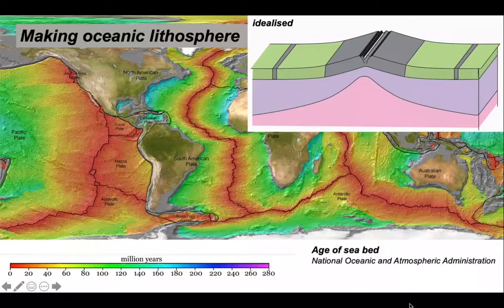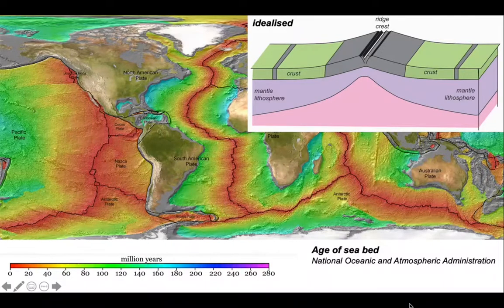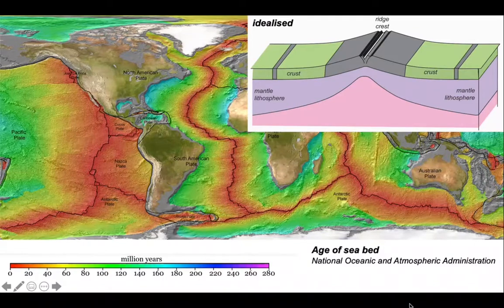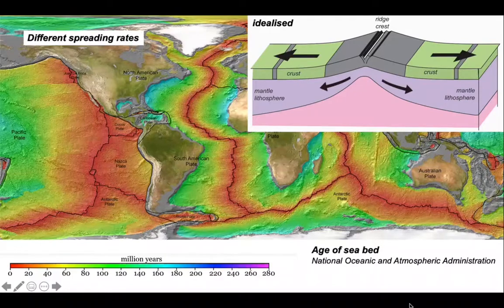We can cartoon this up in this idealized block diagram and infer that the crust is formed at the ridge crest. Consequently, as more crust is formed at the ridge, the earlier formed crust is moved away.